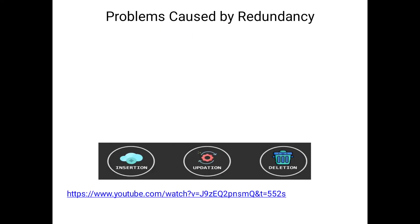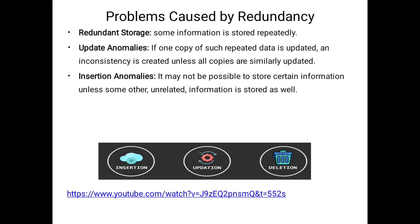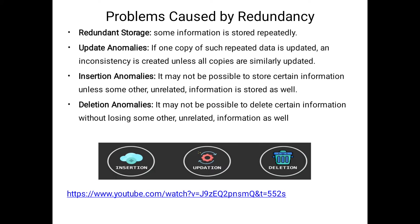Another main advantage of normalization is reducing redundancy. The problems caused by redundancy include insertion anomalies, updation anomalies, deletion anomalies, and storage redundancy. Redundant storage means some information is stored repeatedly. We rectify repeated information with the help of normal forms. For more information on these anomalies, please watch the previous video — the link is available.